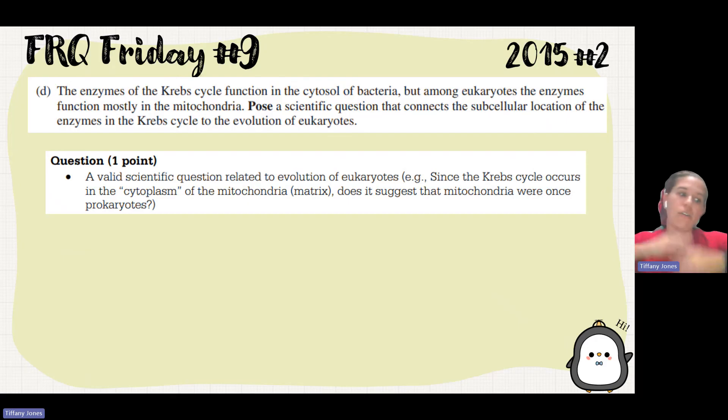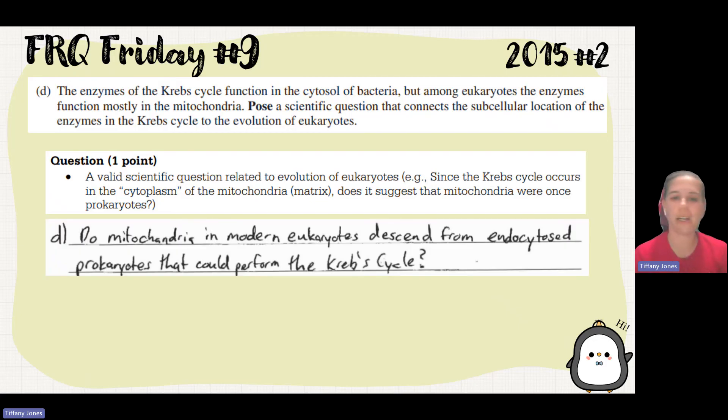Since it's in that kind of interior part of that mitochondria, which is a prokaryote, that is the cytosol of it. So it's kind of connecting that to being part of endocyte theory. The students said, do mitochondria in modern eukaryotes descend from endocytosed prokaryotes that could perform the Krebs cycle? And so that was their question.